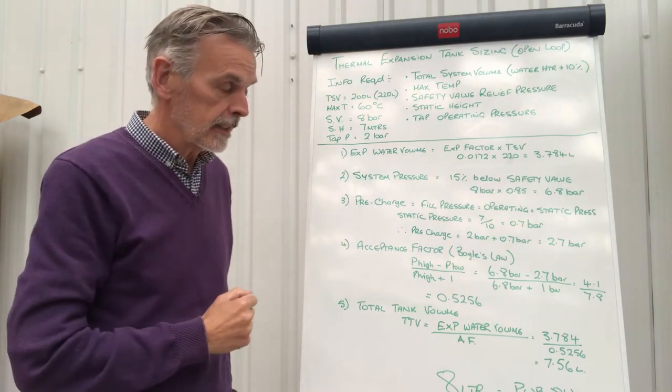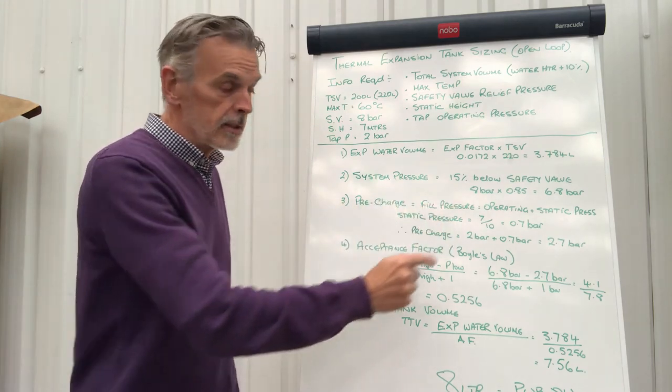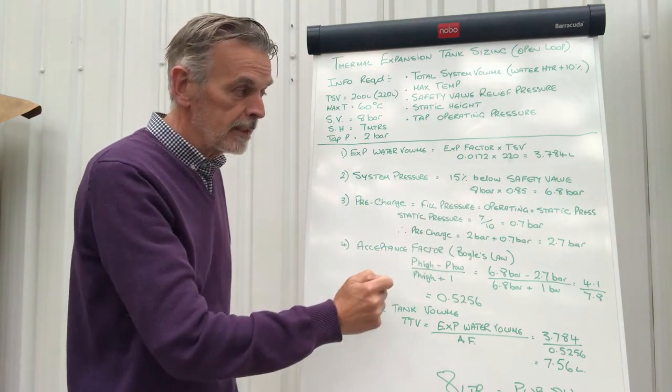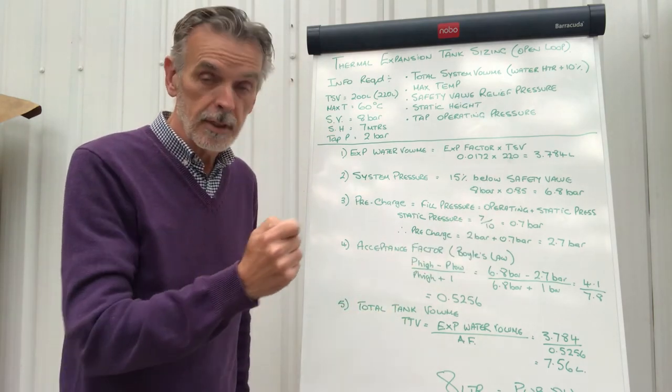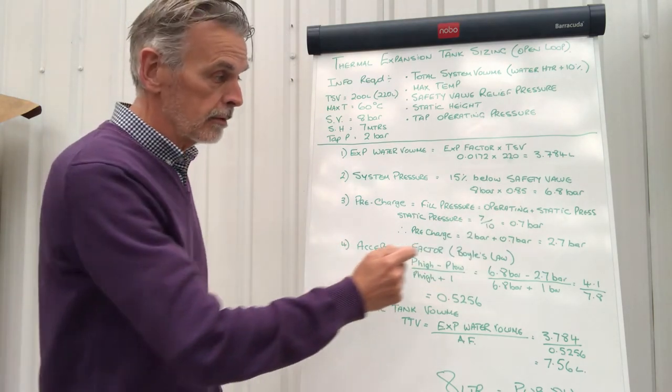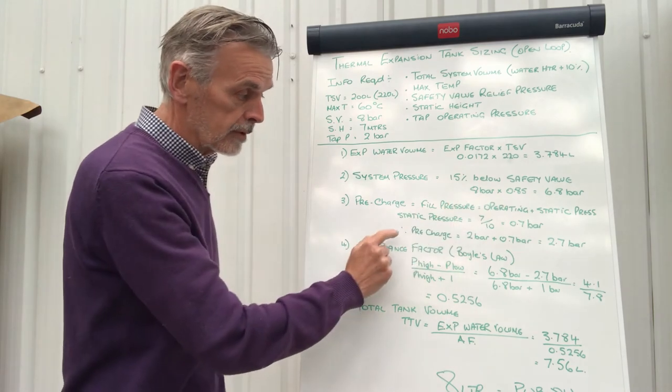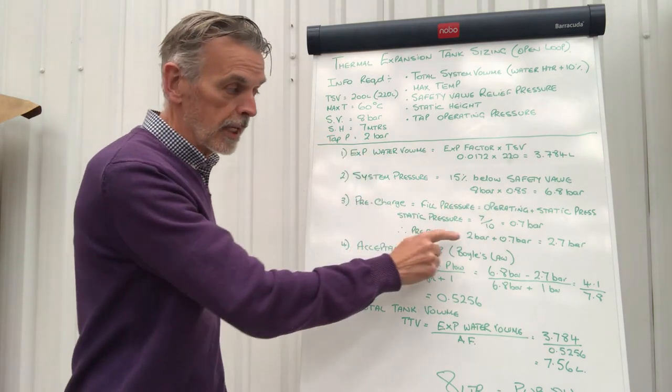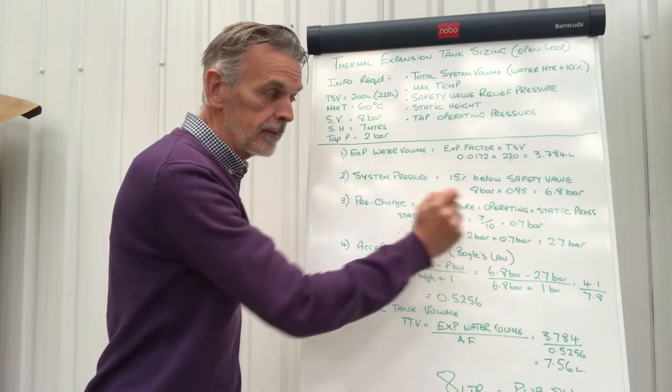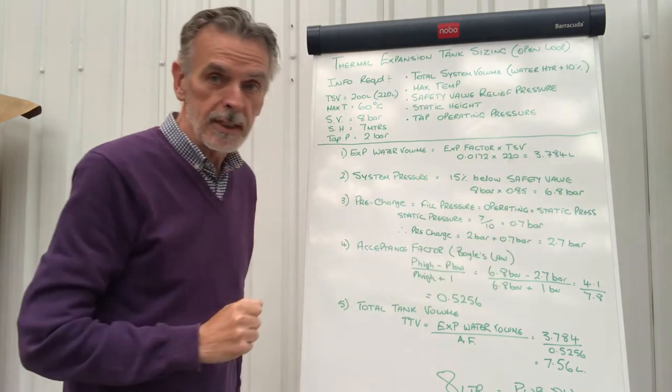So in this particular calculation, that's 7 metres. So 7 metres divided by 10 is 0.7, and that's converted it into bar. So 0.7 bar. So the pre-charge is now the tap pressure you require of 2 bar plus 0.7 bar equals 2.7 bar.